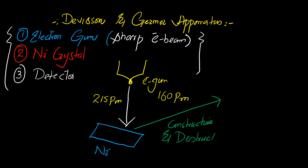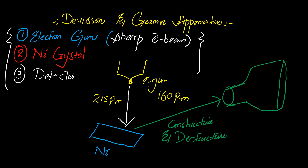Both types of interference were caused whenever the electron beam was incident on the nickel crystal. The diffraction from the nickel crystal by the electron beam was detected by a detector, and the current in the detector varied accordingly, indicating constructive and destructive interference. On the basis of this, Davison proved that electrons, which are particles, behaved like a wave, since interference and diffraction are properties of a wave.